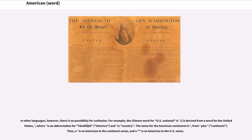In other languages, however, there is no possibility for confusion. For example, the Chinese word for U.S. national is derived from a word for the United States, where one character is an abbreviation for Yamaligia — America — and another means country. The name for the American continents combines that root with the word for continent. Thus, one term is an American in the continent sense, and another is an American in the U.S. sense.